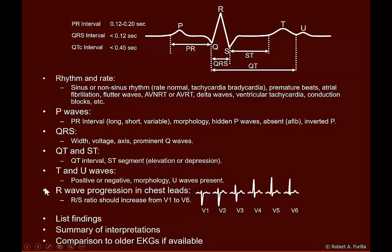Then I go to the chest leads and look for R wave progression from V1 to V6 — the RS ratio should increase from V1 to V6. R is very small in V1 and gets very large toward V6. In the end, you want to list your findings, provide a summary of your interpretations, and if you have an older EKG, you want to make a comparison — is it the same or different, and if so, what caused the differences? That concludes this talk on basic electrocardiograms.